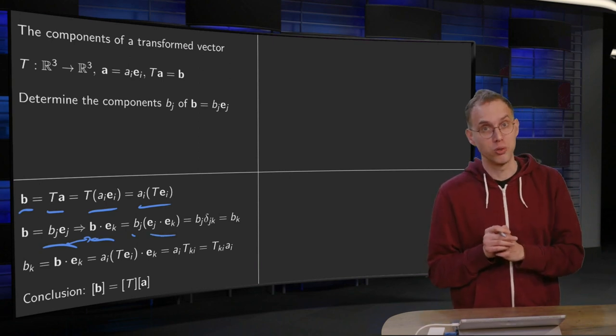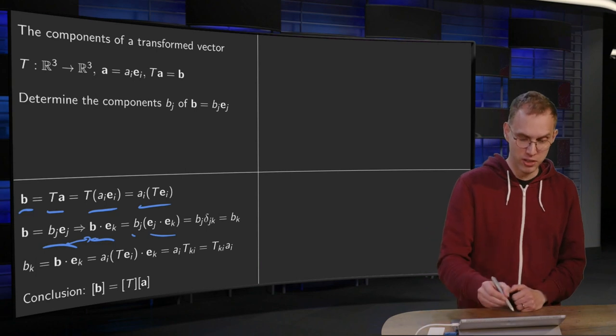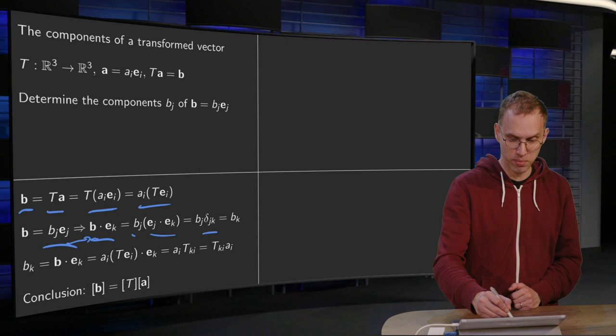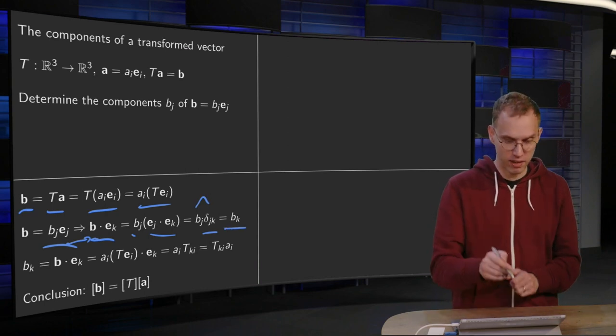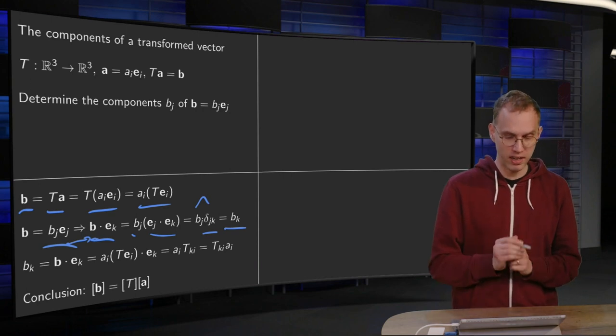And as usual, we choose our orthonormal basis. So Ej inner product Ek equals delta jk, and the sum over j picks out the Bk. So what we have found is that Bk equals B inner product Ek.